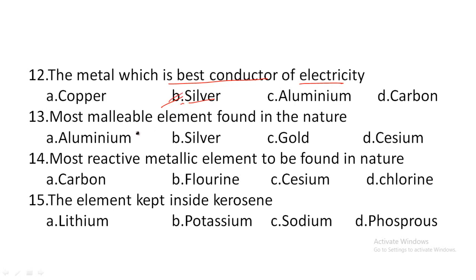Next one: the most malleable element found in nature — option A: aluminium, option B: silver, option C: gold, option D: cesium. Malleable means it can be beaten into small thin layers. For ornaments, gold is used because it is very malleable and can be shaped easily. So the most malleable element found in nature is gold. Hence option C is the correct answer.